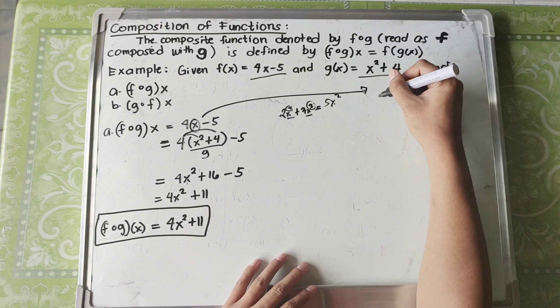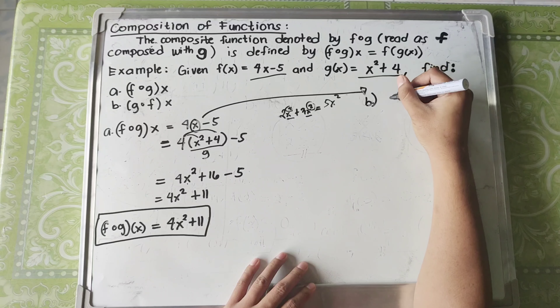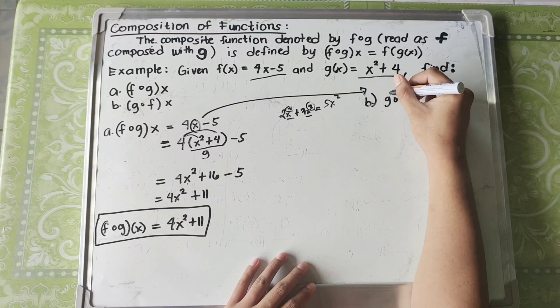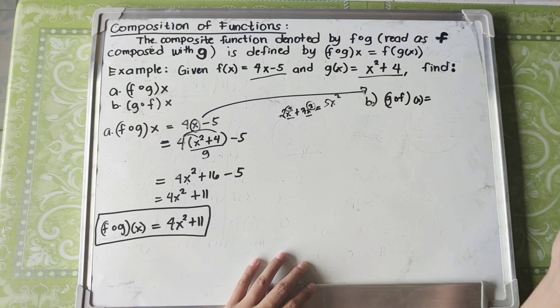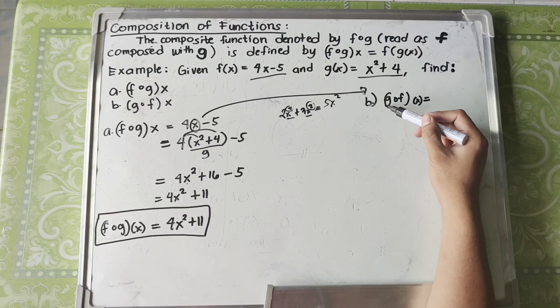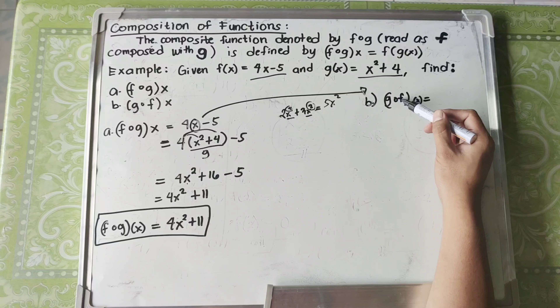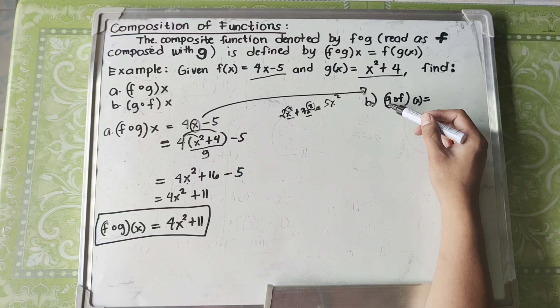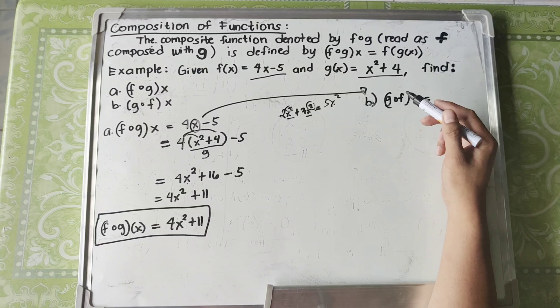Let's proceed to letter B: G composed with F. G comes first, so G is the one being substituted into. F comes second, so F goes into G. The first step is to simply copy the equation of G, since G is the one being substituted into. So we copy X squared plus 4.